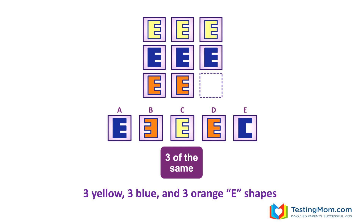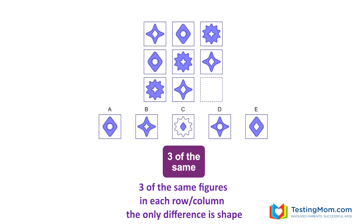The next rule is called three of the same. Puzzles like these have three figures that are exactly the same — it might be a shape, color, number, rotation, etc. In this puzzle, every box has the same E shape but they're three different colors, so D is the answer. Now three of the same puzzles can be tricky when the same three things aren't right next to each other. Here is a three of the same puzzle where the three things that are the same are not next to each other — the three of the same rule can be harder to recognize. But if you look carefully, you'll see that there are three different figures of the same color, one in each row and column. To complete the pattern, we're looking for the diamond shape with the burst in the center, so the answer is A.